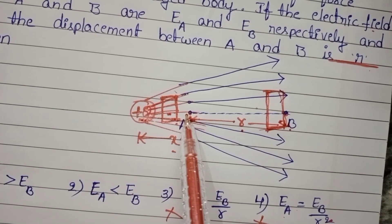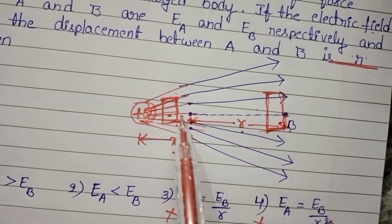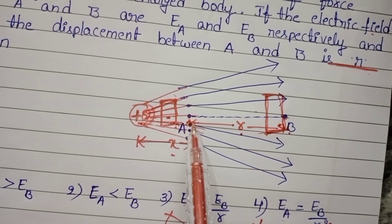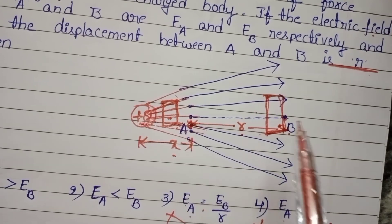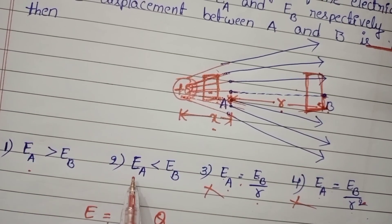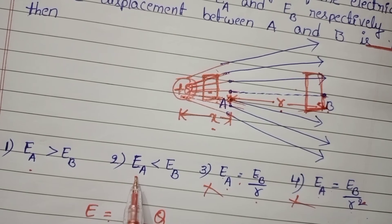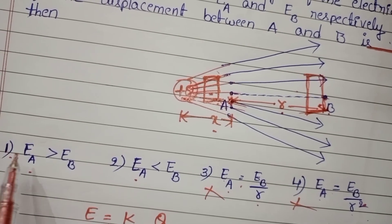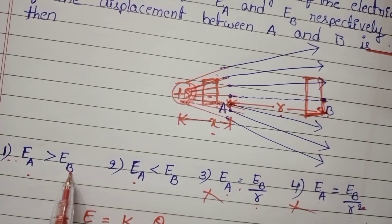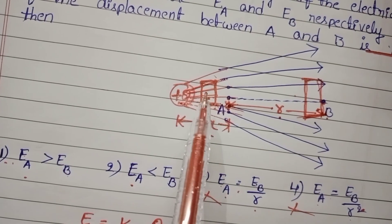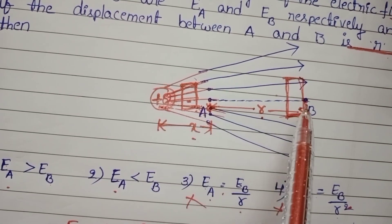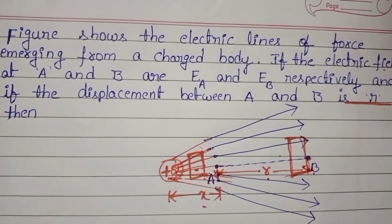The density of field lines gives the magnitude of the intensity of electric field. So the correct option is the first option: the intensity of electric field at point A is greater than at point B, because the number of field lines at point A is greater than at point B.